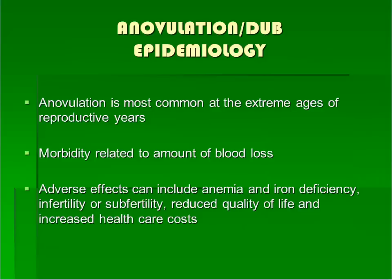Anovulation is most commonly seen in the one to two years after menarche, when the hypothalamic-pituitary-ovarian axis is immature and the girl has not yet begun to ovulate. It is also commonly seen in perimenopausal women who have few functional ovarian follicles left, so ovulation does not occur or is irregular.